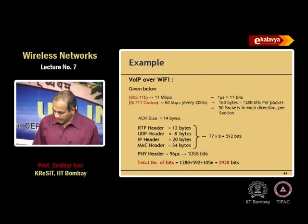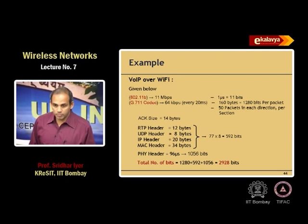So in 1 second, how many such packets are going to be generated? 50 packets in each direction. There are going to be 50 packets going from the client to the other end and 50 packets coming in the reverse direction as well. This is the total number of packets that have to be fitted in 1 second of the 11 Mbps channel.